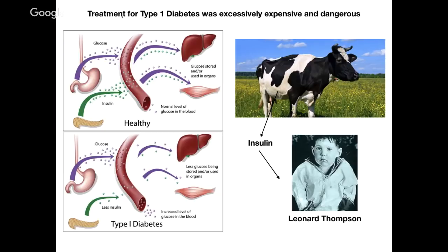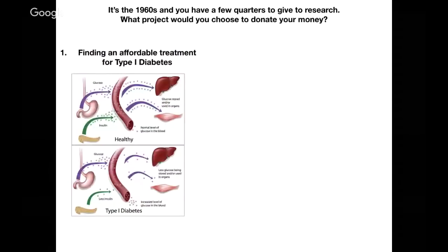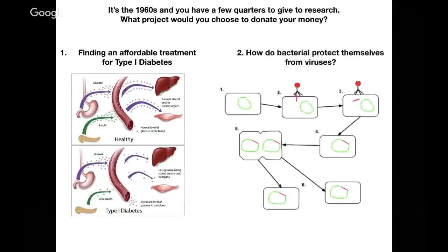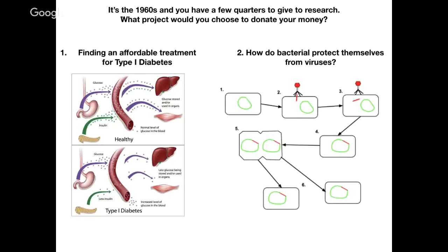So let's fast forward to the 1960s. Let's say you have a few dollars to give to research, and you have your choice to fund two different projects. One project would be to focus on finding an affordable treatment for type 1 diabetes. Or would you fund a project that asks, how do bacteria protect themselves from viruses? Bacteria, just like we are, can contract viruses, and in bacteria, DNA from the virus is injected into the bacterial cell and inserts itself into the bacterial genome. And they have ways to protect against this. Which do you choose to fund?